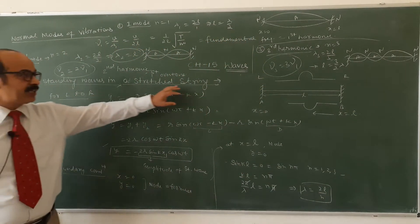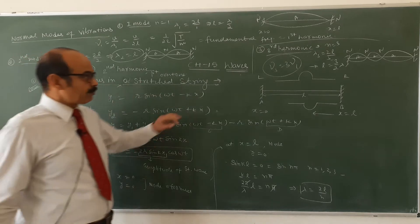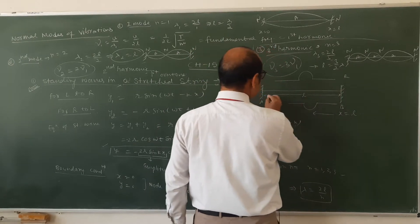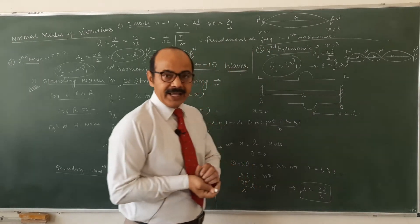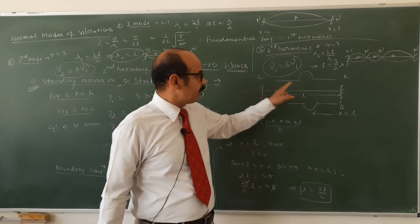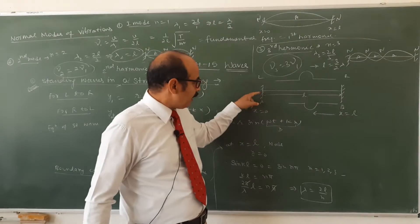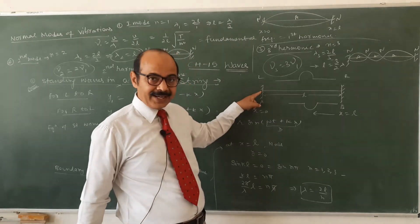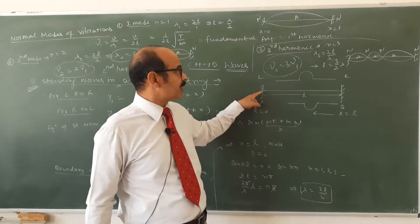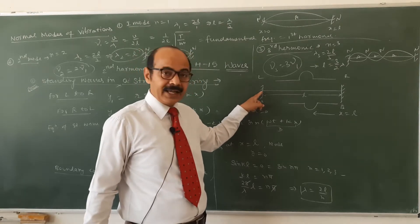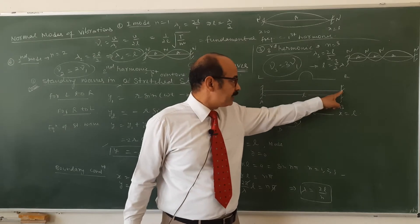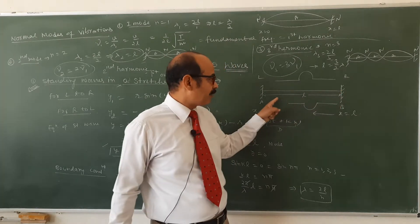Standing waves in a stressed string — मैं क्या होता है? Suppose यह मेरा कोई string है, जो दो points A और B के बीच में tight करके बांधा गया है, और L is the length of the string. यह left end हो गया, यह right end हो गया. When tension is produced at the left end, अगर मैं इसको left end पर plug कर देता हूं, a plane progressive wave will be formed, जिसका equation होता है r sin(ωt − kx), वो यहां से चलेगी, और इस right end से reflect होके फिर वापस आएगी.